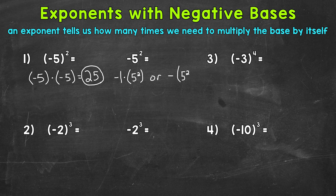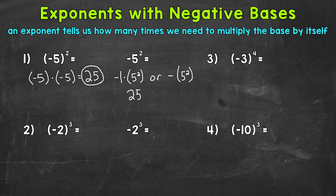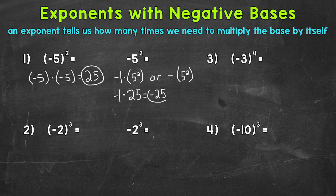Or we can think of it as having a negative in front that's not attached, and then we have the 5 squared. Let's start with negative 1 times 5 squared. Well, positive 5 times 5 — 5 squared — gives us 25. We have to do that 5 squared first due to the order of operations, which comes before multiplication. So 5 squared equals a positive 25. Then we bring down our negative 1, giving us negative 1 times 25. A negative times a positive equals a negative, so this gives us negative 25.